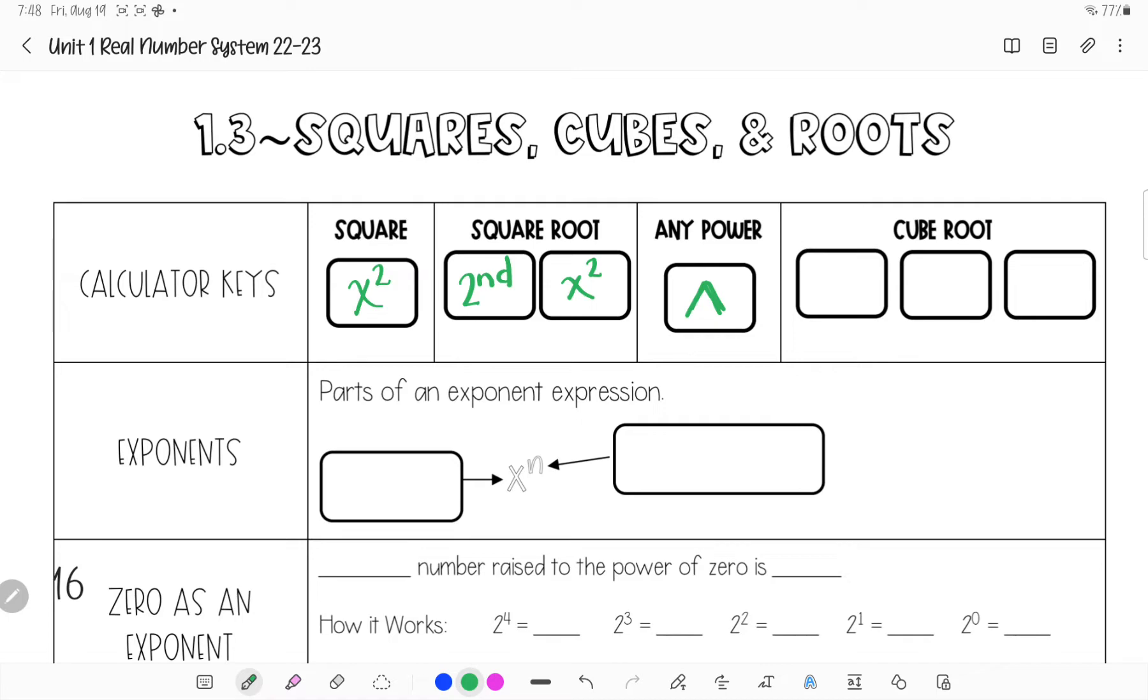And then to cube root. This is the one that's done wrong the most. You must hit three first. Then you have to hit second. And then you'll hit the caret key. I tell you this because it should have a little three and then that sign. That is correct if it looks like this. It is wrong if it has a big three and then this. This is not right.